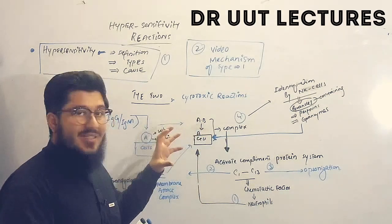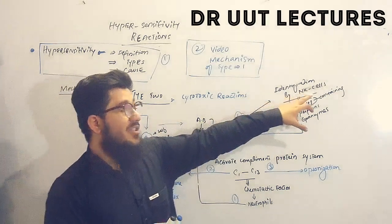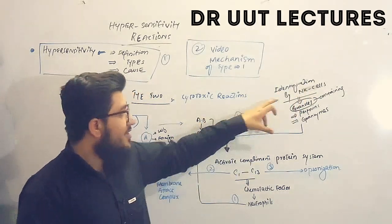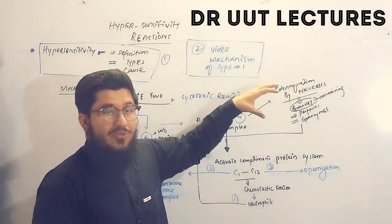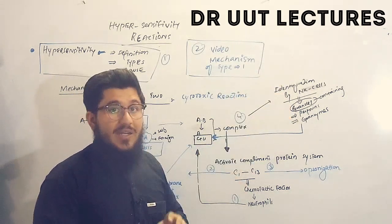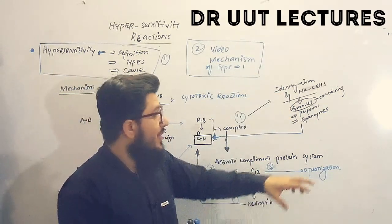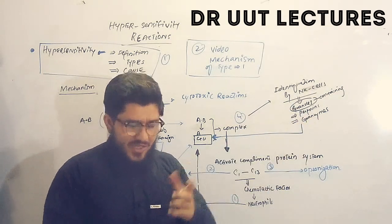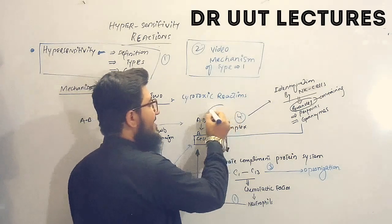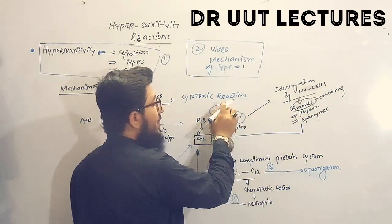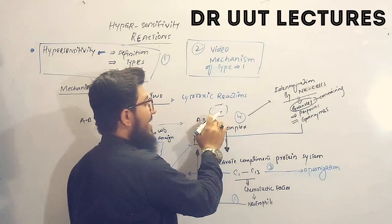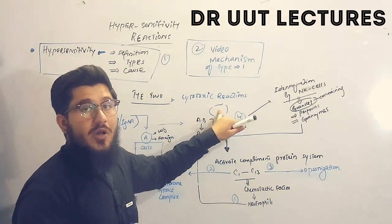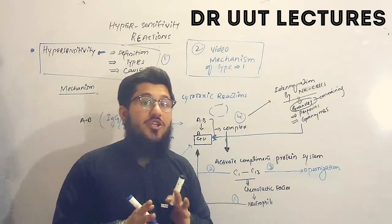We have a fourth mechanism in which this complex is sometimes identified by natural killer cells. When the natural killer cells approach the complex, they release granules containing perforins and granzymes. The perforins introduce pores in the cell, and then the granzymes enter and destroy the cell — causing destruction of the cells.